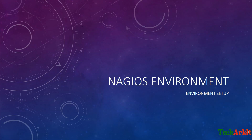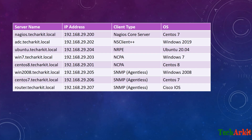Let me show the environment I have used in this course. These are virtual machines — I have installed VMware Workstation and on top of that created these VMs with different IP series. One is the Nagios server, nagios.techarkit.local, with the IP assigned, installed with Nagios Core on CentOS 7. I chose CentOS 7 because CentOS 8 has PHP-based errors and graphing services not working properly. You can use CentOS 7, CentOS 8, Ubuntu, or Red Hat platforms to install Nagios Core — the process is similar.